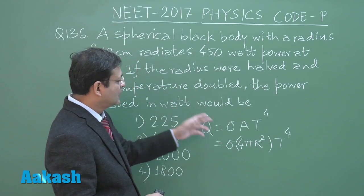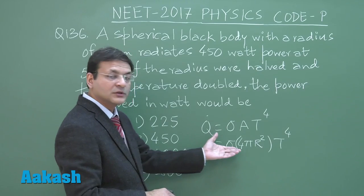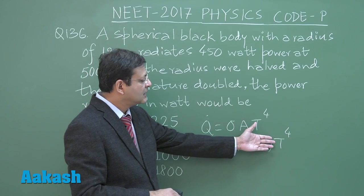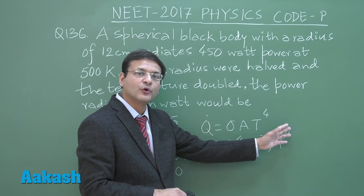If it is half, that means 1 fourth, isn't it? r square is 1 fourth and T is getting doubled. So, 2 power 4.